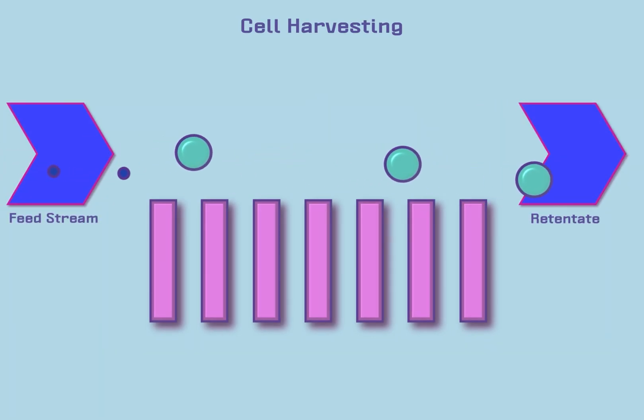TFF is used to collect cells when centrifugation is not available or practical. Microfiltration membranes are used because most other materials will pass through and cells will be retained inside the membrane.